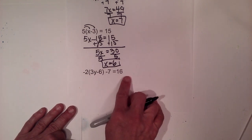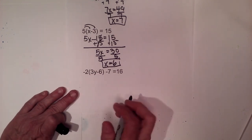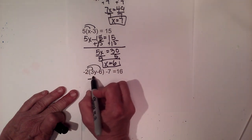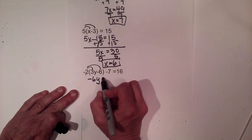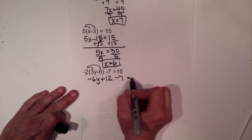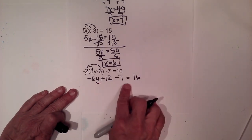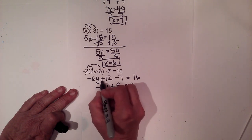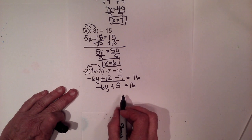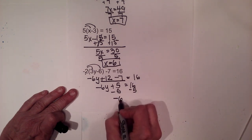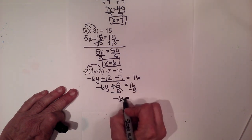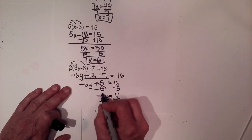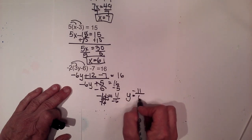This next problem combines the distributive property with simplifying. First, distribute the negative two into the parentheses: that gives negative six y, and negative two times negative six is positive twelve. Bring down the negative seven, equal to sixteen. Simplify the left side: combine the two constants, negative twelve minus seven gives negative seven, so we have negative six y plus five equals sixteen. Subtract five from both sides — the fives cancel, giving negative six y equals eleven. Divide by negative six, so y equals negative eleven over six.